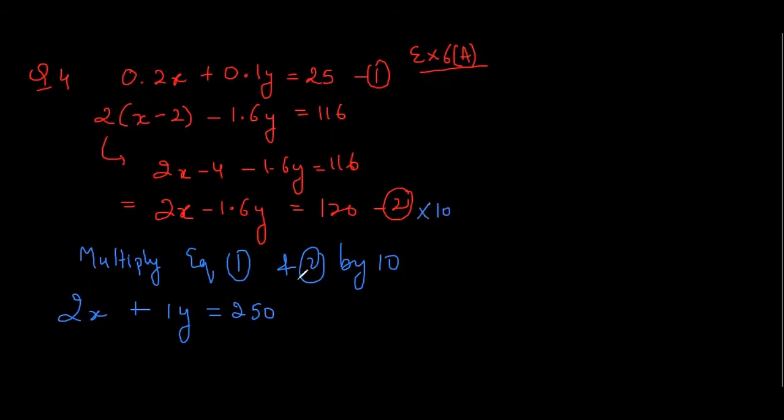Then multiply this also by 10. What will happen, can you tell me? 20x minus 16y equals to 1200. Is it clear? Yes sir, these are the equations now.